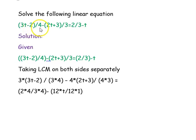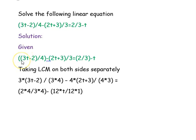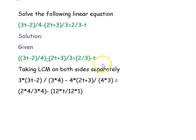The equation is: (3t minus 2) divided by 4, minus (2t plus 3) divided by 3, equal to 2 divided by 3, minus t. We take the given equation and put parentheses appropriately, so (3t minus 2)/4 is one expression, minus (2t plus 3)/3 is another expression, equal to 2/3 minus t.